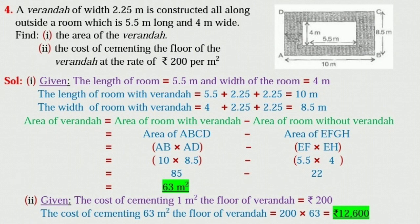Now, area of the veranda is equal to area of room with veranda minus area of room without veranda, is equal to area of rectangle ABCD minus area of rectangle EFGH, is equal to AB into AD minus EF into EH, is equal to 10 into 8.5 minus 5.5 into 4, is equal to 85 minus 22, is equal to 63 meter square.